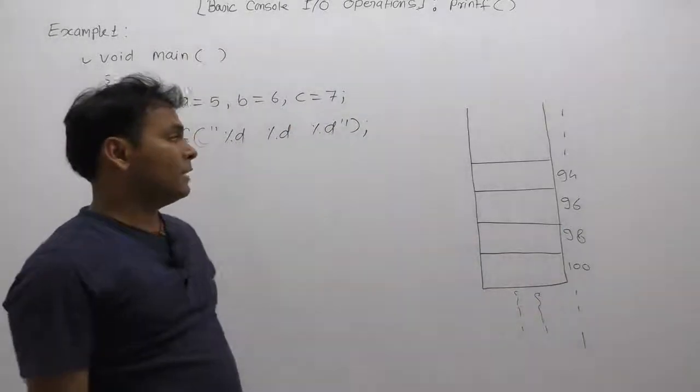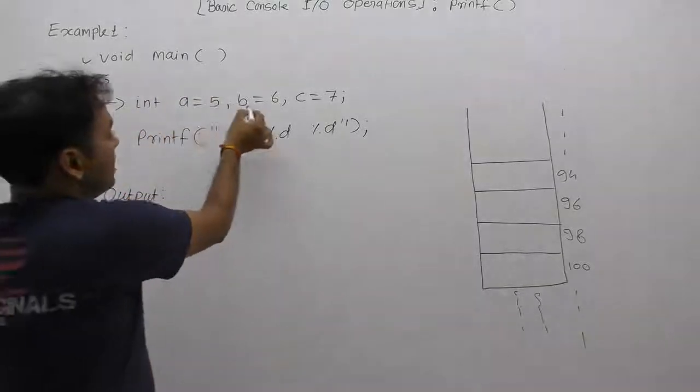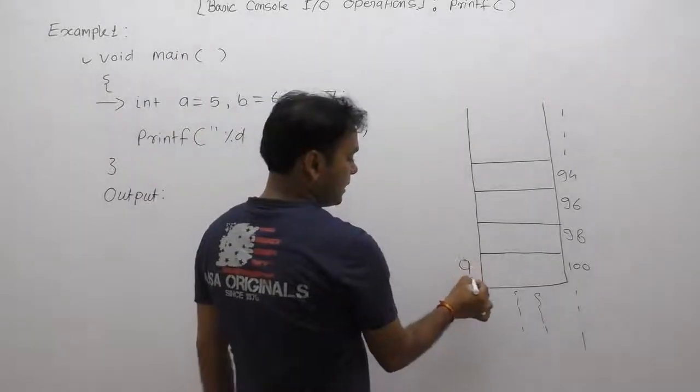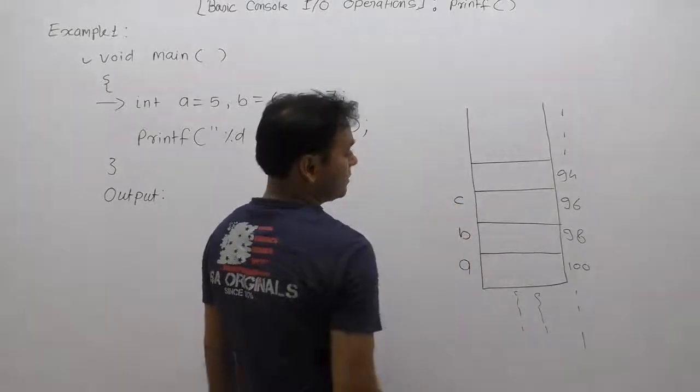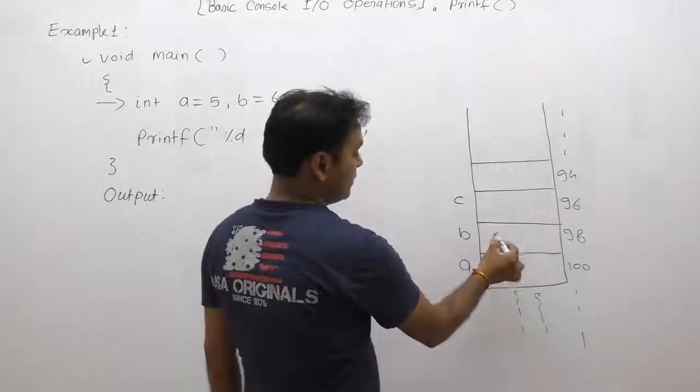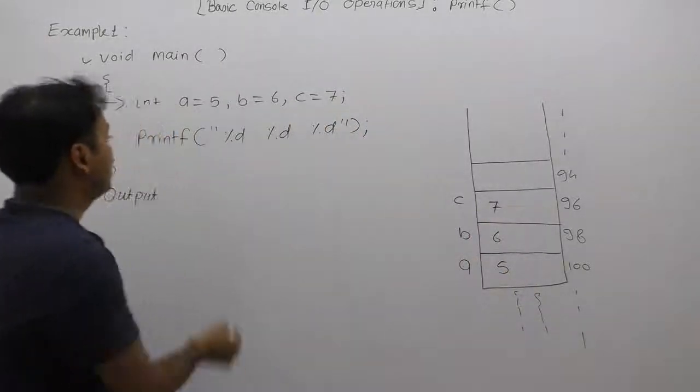First of all we are declaring variable a, next b, next c. Therefore allocation for a, allocation for b, allocation for c. We are assigning value of a=5, b=6, c=7.